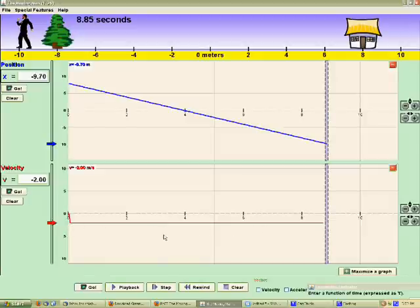This is what the velocity graph looks like for a line with a non-zero slope. Since the slope is negative and decreasing downwards, the velocity is negative and below the zero. Thanks for listening.